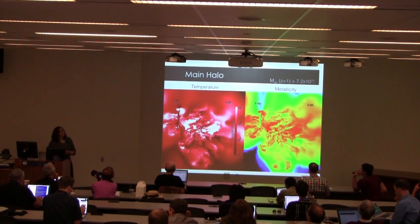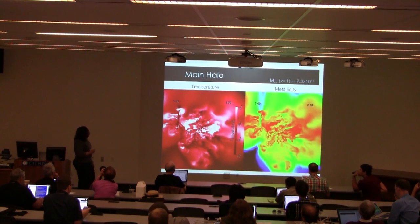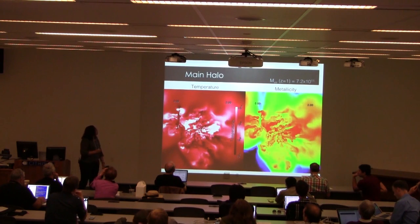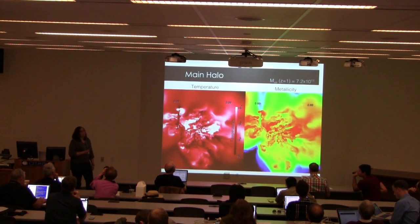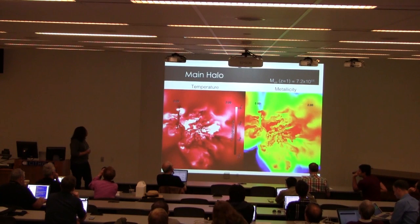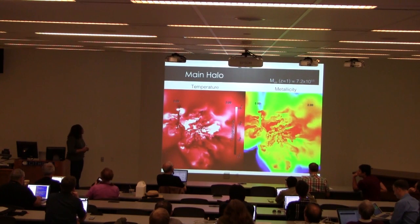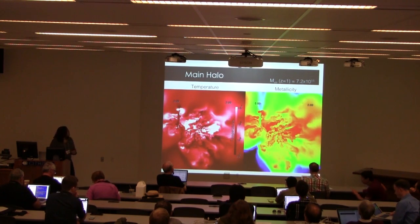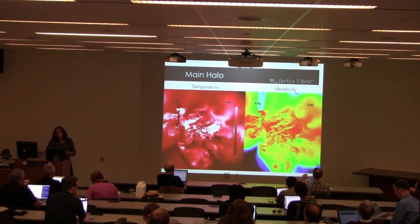Looking further at the visualization, we see temperature — where white is hotter — and metallicity — where red is more metal-rich. We see a pretty active environment with some high-temperature and low-temperature regions, representing a wide range of velocities.